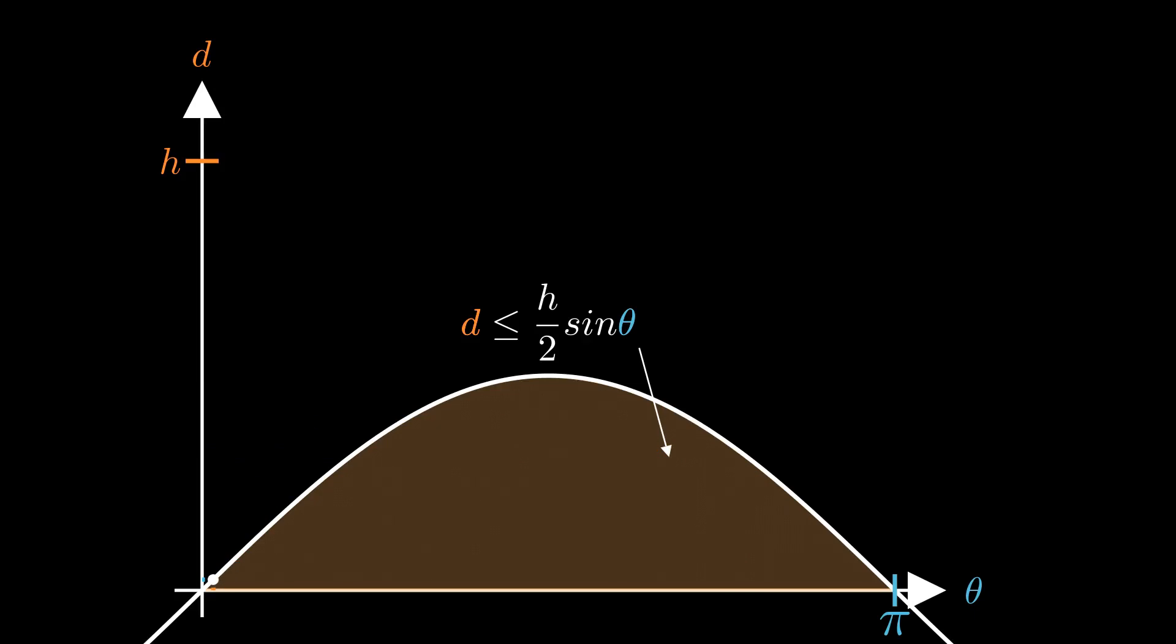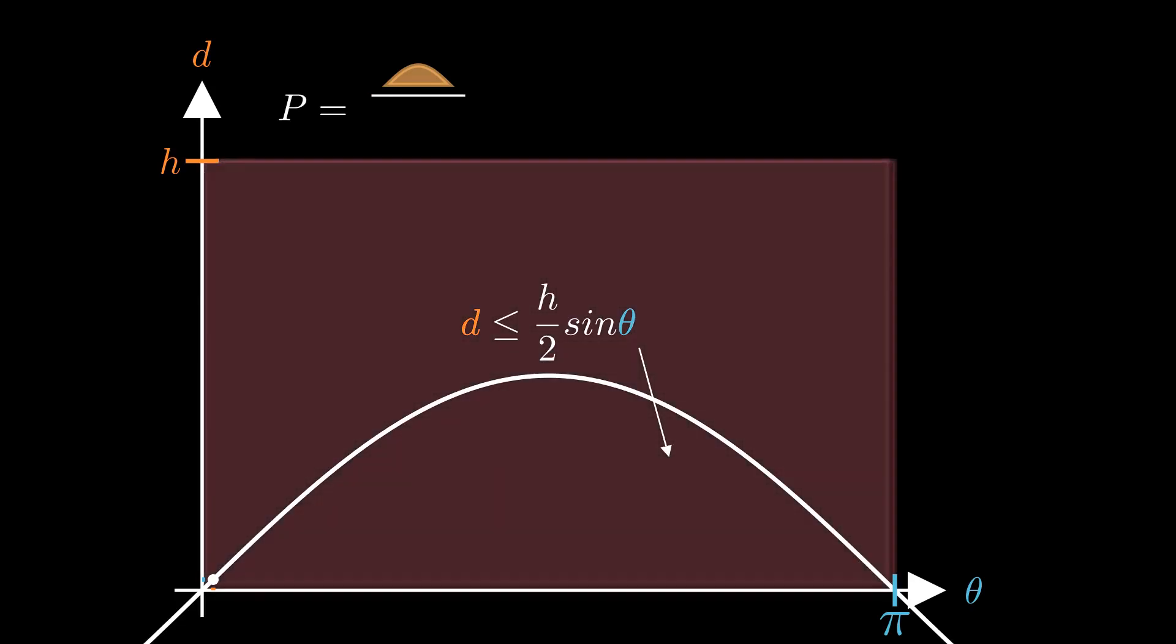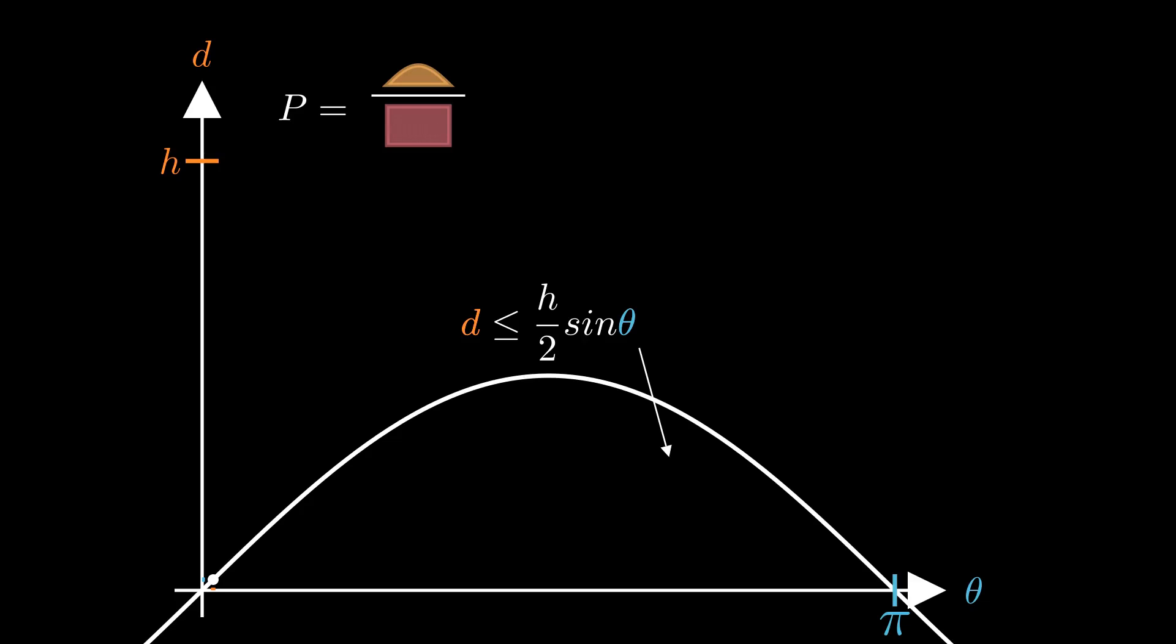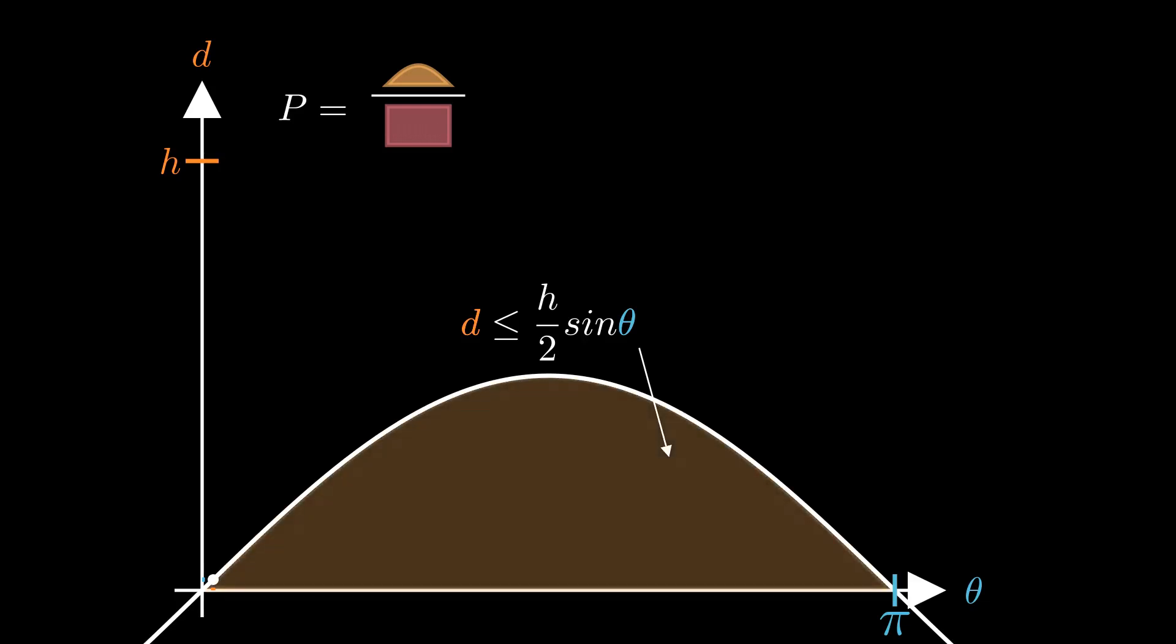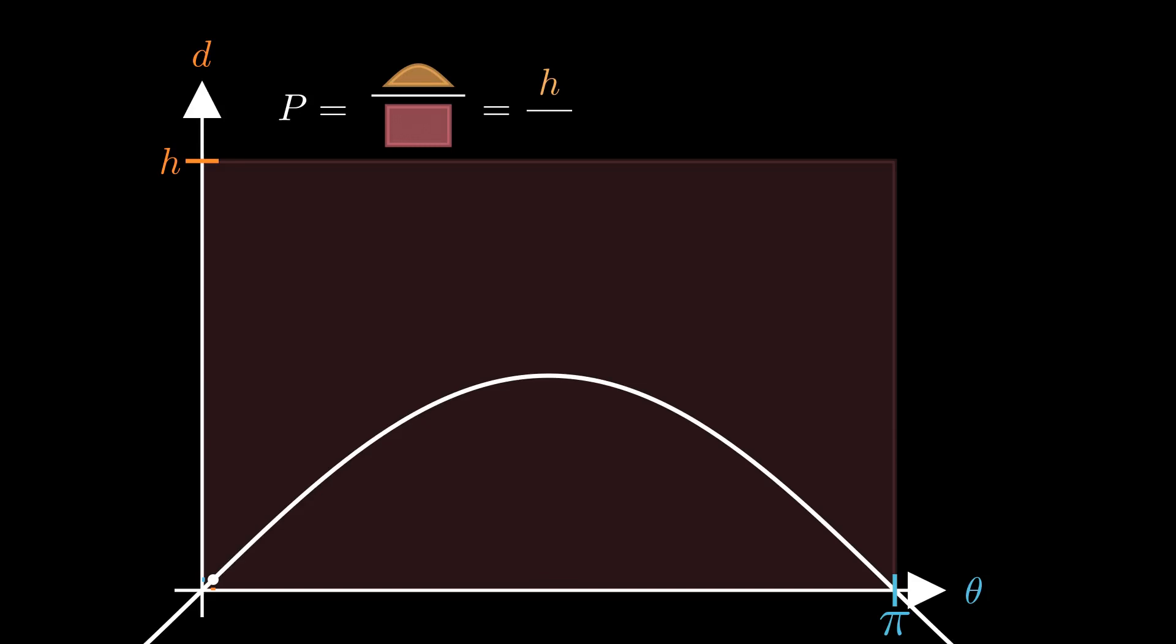From this, the probability of a needle crossing the line is equal to the area of the shaded region under this function divided by the area of the rectangle. This area can be found by evaluating the integral of h over 2 sin theta between 0 and pi. And the area of the rectangle is just length times height.